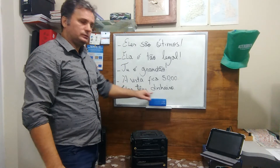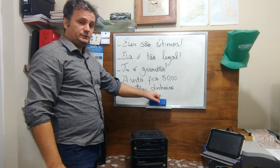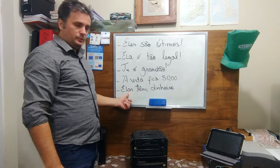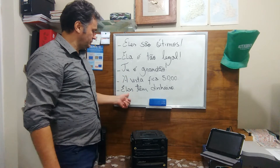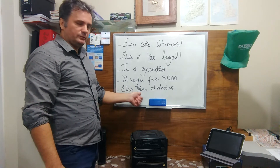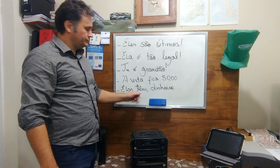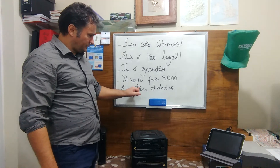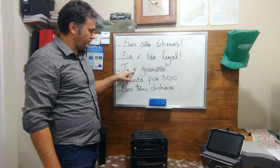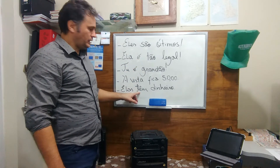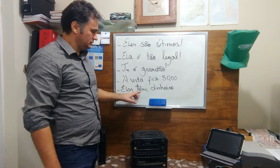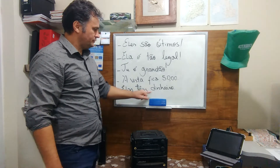Elas têm dinheiro — they have money. Elas is the feminine plural in Portuguese. Têm is the verb to have in the third person plural, and it has the acento circunflexo — it's closed. It's different from E. Têm — E, closed. They have money.